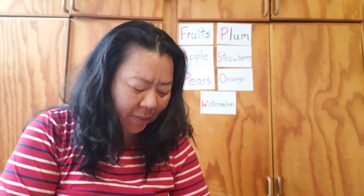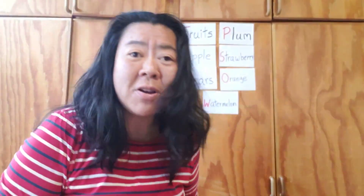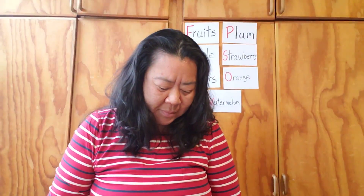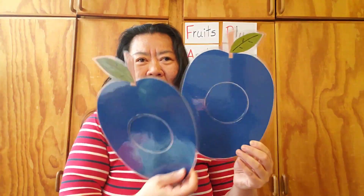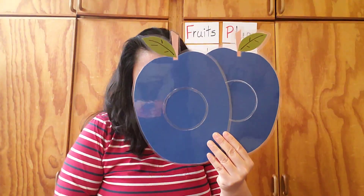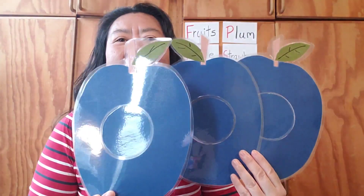Did you enjoy learning about different kinds of fruits? Now let's count! This is an apple — I have one apple. This is a pear — I have one, two, two pears. Remember this one? Plum — I have one, two, three, three plums.